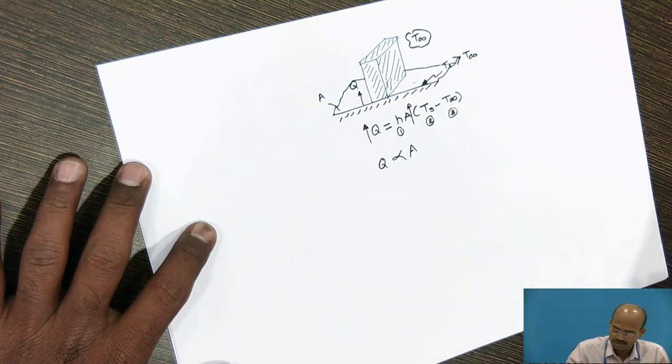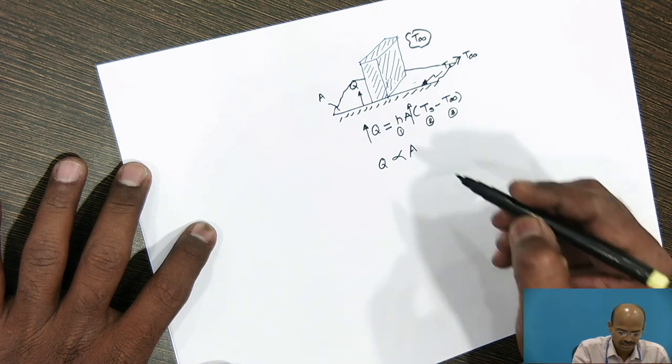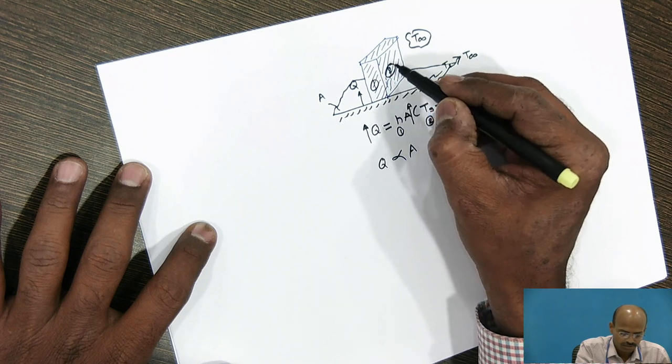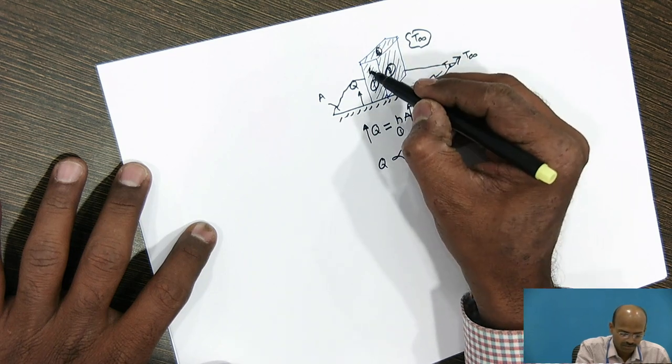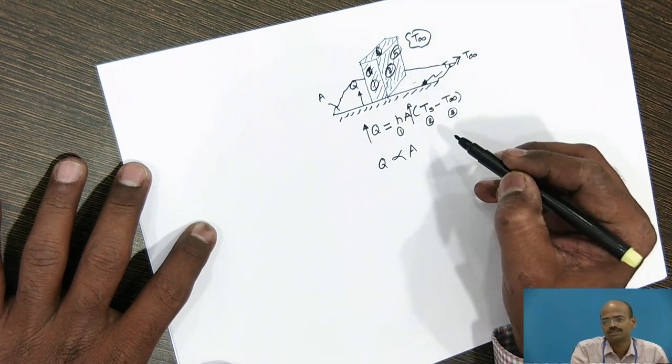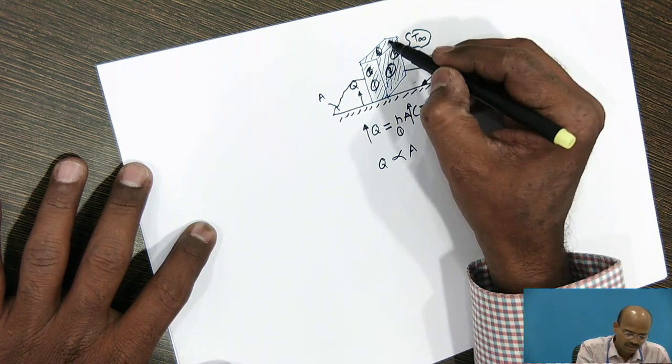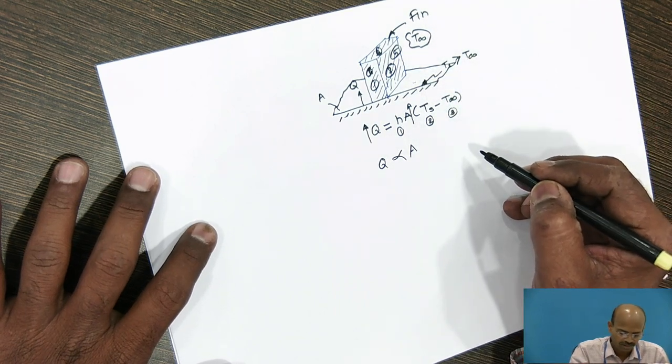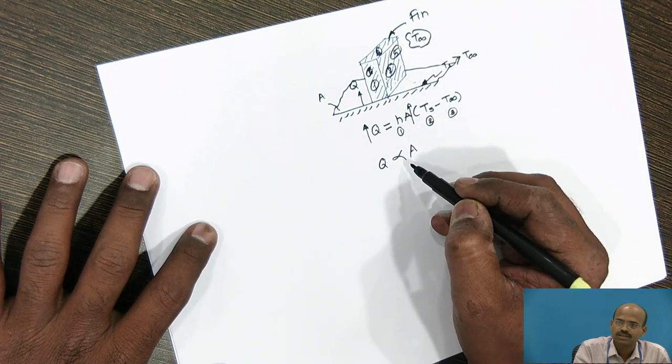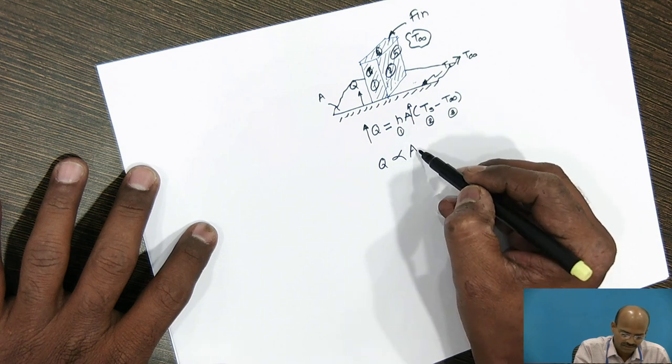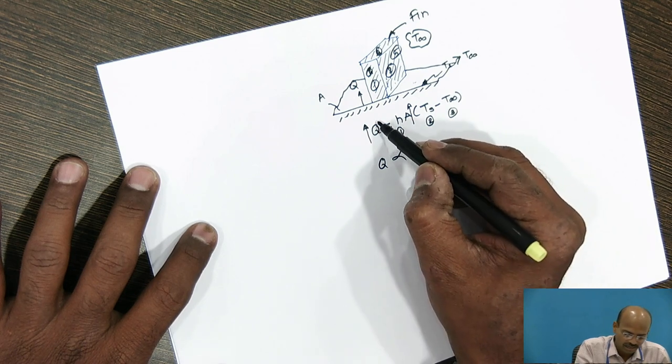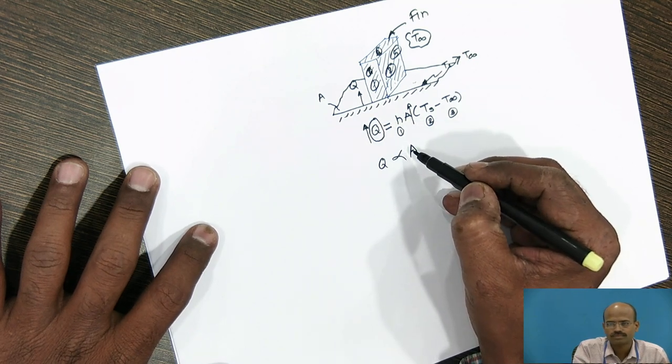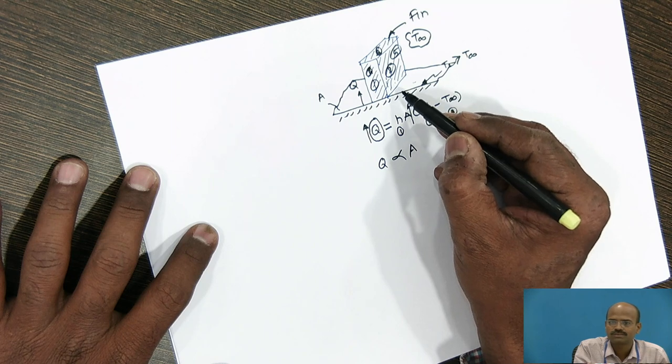So, this surface area has been increased by 1, 2, 3, back side will be 4, this side will be 5 sides. This extended surface is known as fin. So, it is clear now that the extended surface increases the surface area and we will get the enhanced heat transfer. Such surfaces are known as fins.